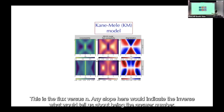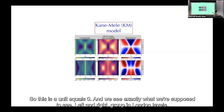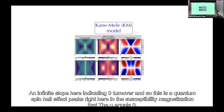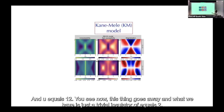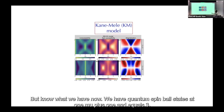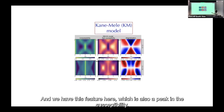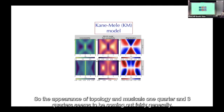Here's the compressibility for Kane-Mele at U=0: we see exactly what we're supposed to — left and right moving Landau levels, infinite slope indicating zero Chern number, and the quantum spin Hall effect peaks in the susceptibility. At U=12, the half-filling state becomes a trivial Mott insulator, but now we have quantum spin Hall states at ν=1 and ν=3 — the appearance of topology at one-quarter and three-quarter filling is coming out fairly generally from both models.